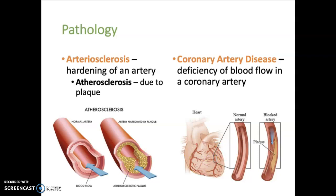With atherosclerosis, the artery narrows, which reduces blood flow, and that can increase the risk of a blood clot forming at that spot. You can see how much narrower the lumen is compared to a normal, healthy artery. Coronary artery disease is any disease that interferes with the ability of the coronary arteries to supply the myocardium — the thick muscle layer of the heart — with blood. If there is a complete block of blood flow to a certain area of the heart, that causes a heart attack, which is a myocardial infarction.